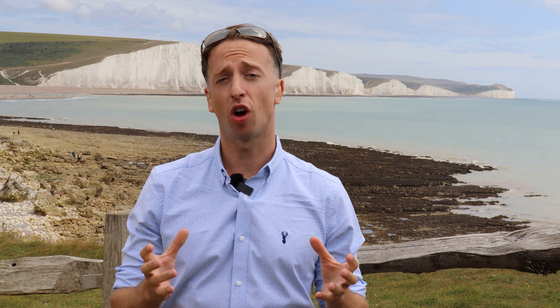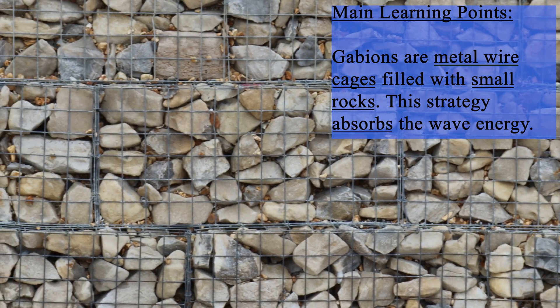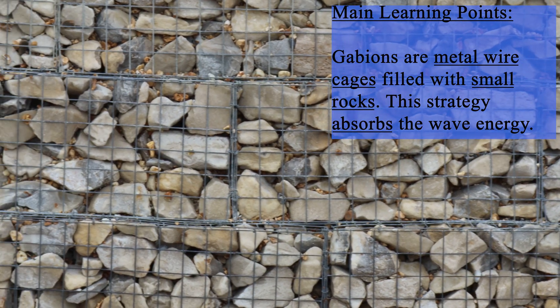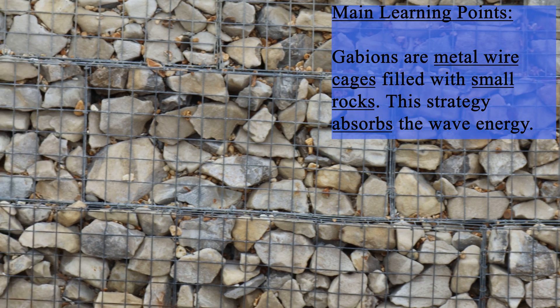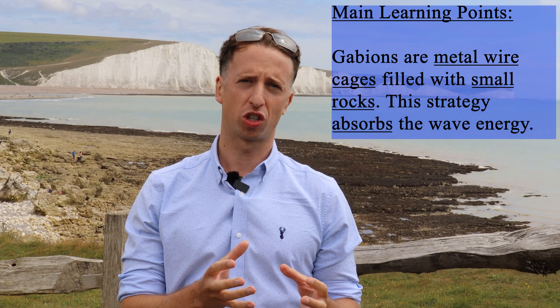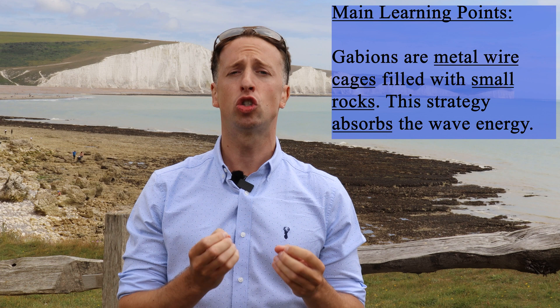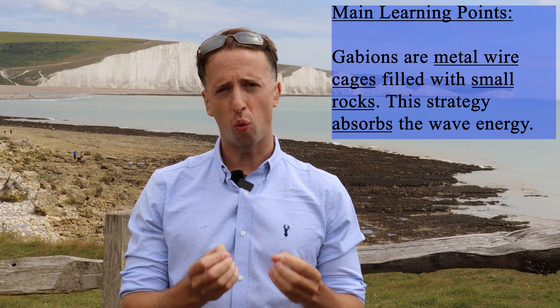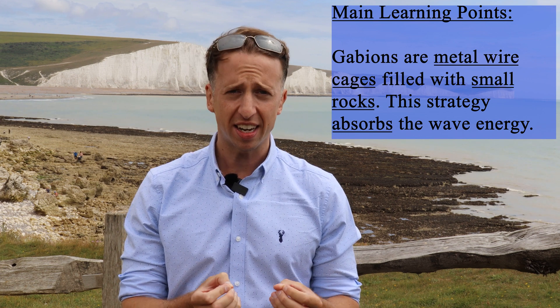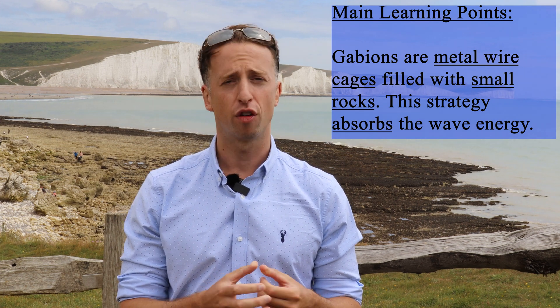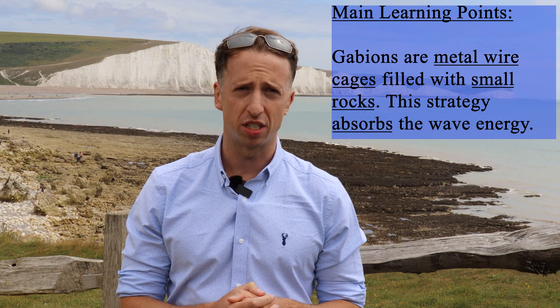The strategy of gabions is a common sight found along many coastlines of the UK. These are metal wire cages filled with small rocks. This strategy absorbs the wave energy, protecting the cliff from being eroded.